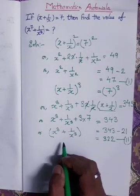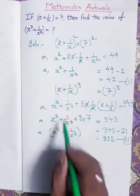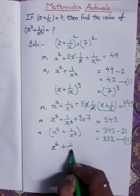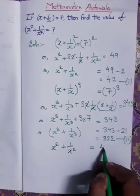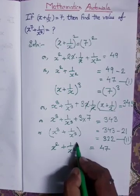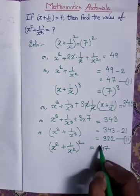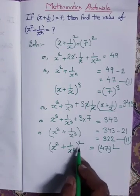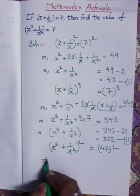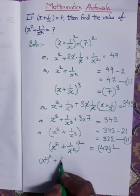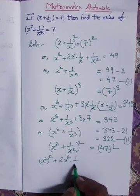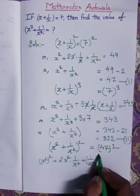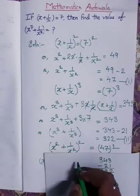We also have x square plus 1 by x square is equal to 47. Now I am doing squaring on both sides of this equation again. In the formula a plus b whole square: a square — that is x square whole square, plus 2ab, plus b square — that is 1 by x square whole square, equals 47 into 47.